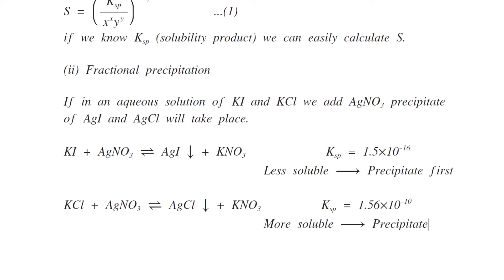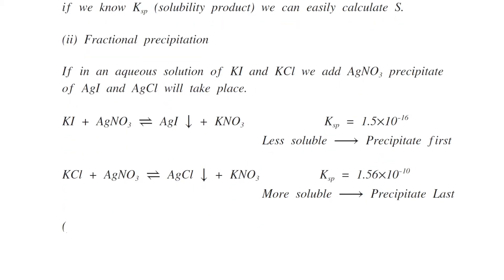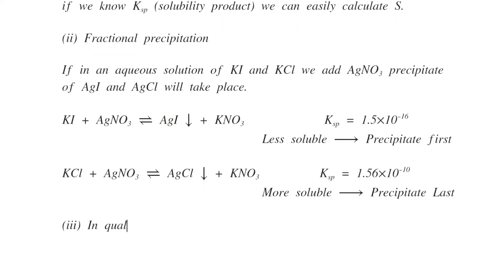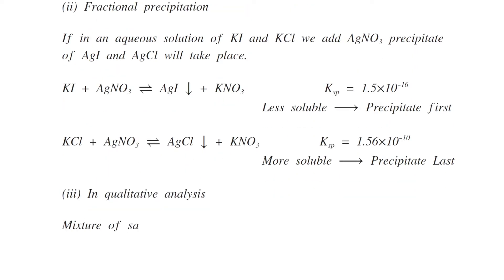So silver iodide will precipitate first while silver chloride will precipitate last. In qualitative analysis, mixture of salts are analyzed by precipitating out less soluble component first and more soluble component at the last.